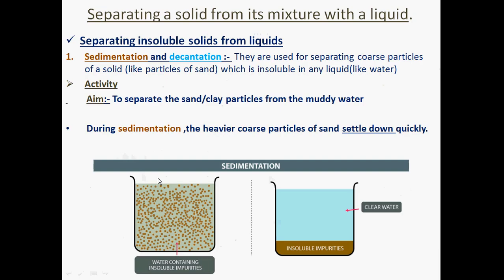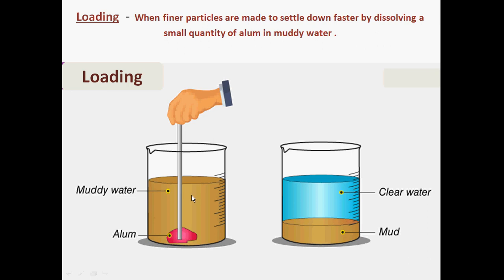Sometimes some of the finer particles do not settle down. So the finer particles which do not settle down are treated with alum. Alum is a coagulant which binds the fine particles together, and when they become heavier, by the action of gravity they settle down at the bottom. As you can see in this figure, we have used alum shown in pink. When a small quantity of alum is dissolved in muddy water, it binds the fine particles together, making them coarse so they settle at the bottom. The clear water is then clearly visible.